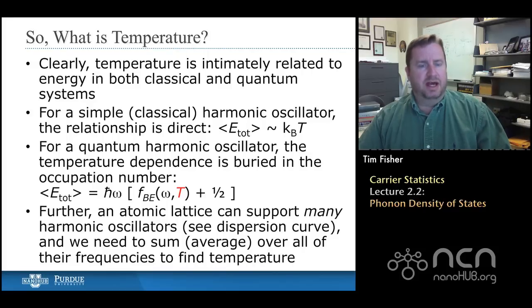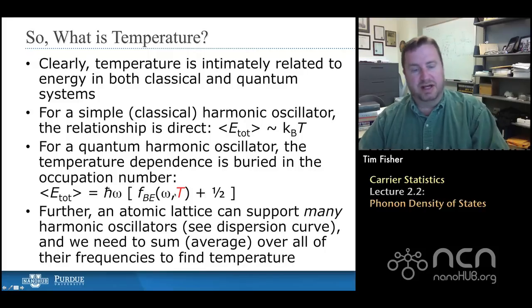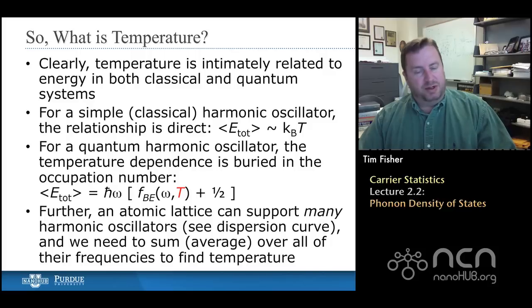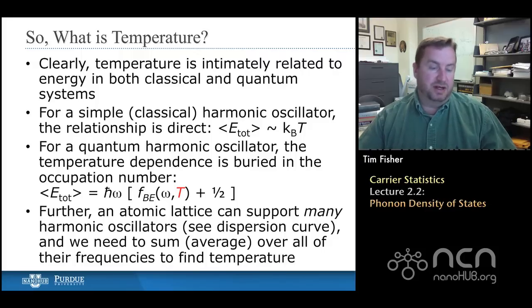Once we get into quantum systems and different types of statistics, then we have to look a little bit deeper. We have to go inside of the distribution function or the average occupation number, as we called it last time, in which case temperature is buried inside of a function. So you'll see in much of the notes in the accompanying text that we'll use these distribution functions quite a bit. But later on what we're going to do is take temperature derivatives of them, for example, quite frequently.